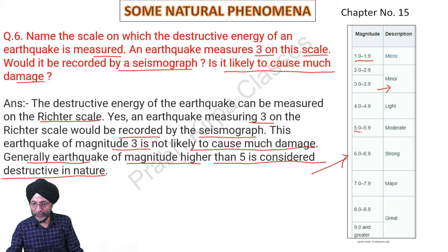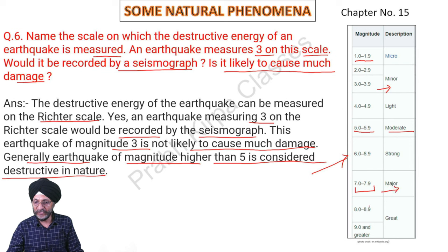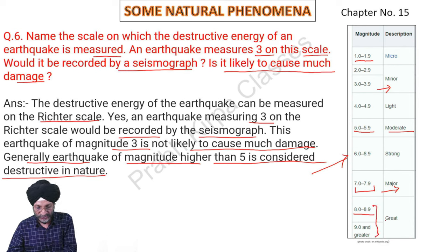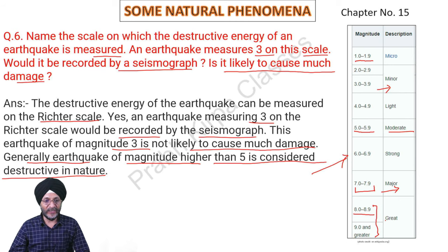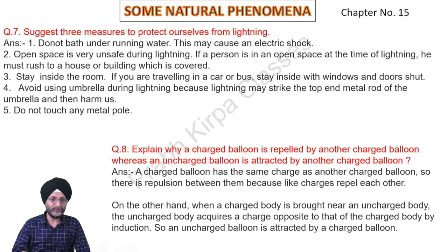For example, if an earthquake is between 5 to 5.9, it is considered moderate. If it is between 7 and 7.9, it is considered major. Above 8, all earthquakes are considered great earthquakes, and the consequences are likely to cause much damage to animal and human life as well as property.